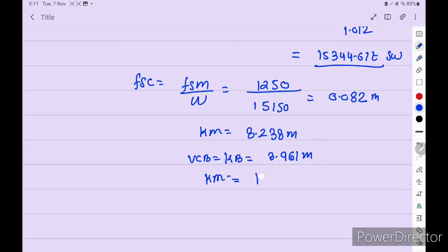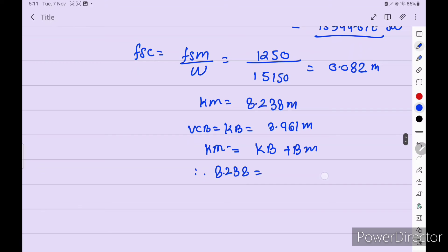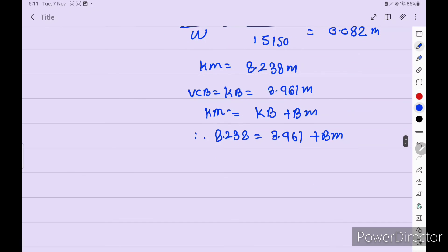So KM is equal to KB plus BM. KM we get 8.238 meter. So BM is equal to, BM is equal to 4.277 meters.